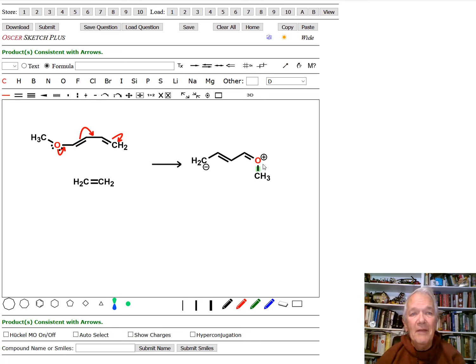But anyway, we now have a partial positive charge on the oxygen. And we've built negative charge up on that carbon here. So this is making the butadiene work better because it now has actual negative charge to donate.